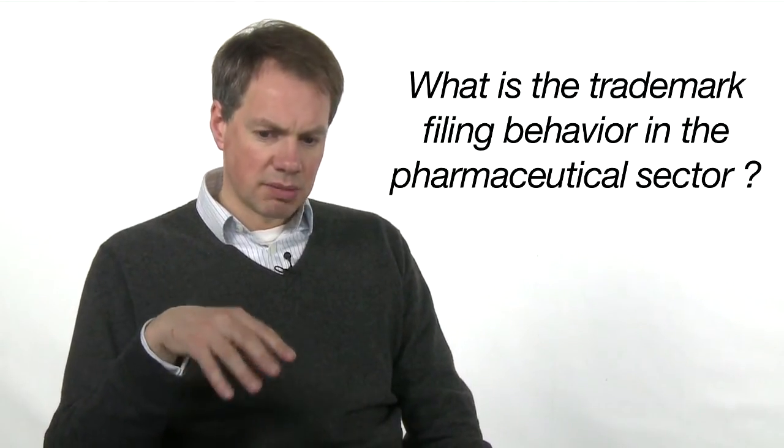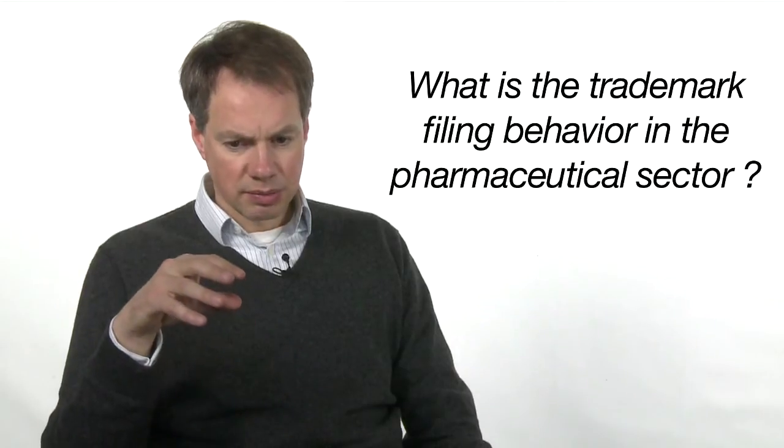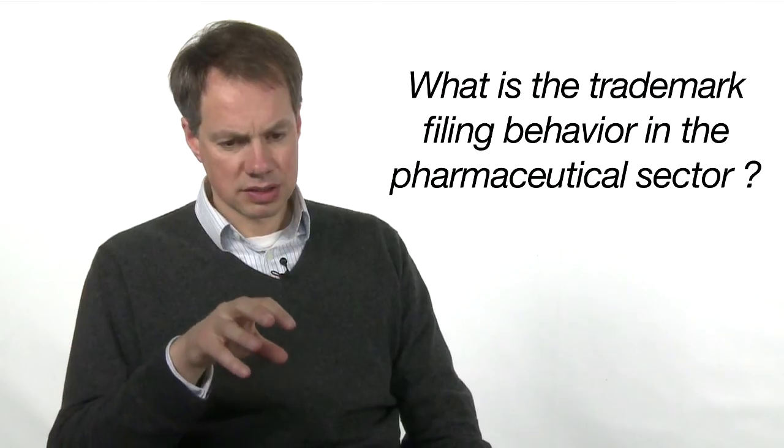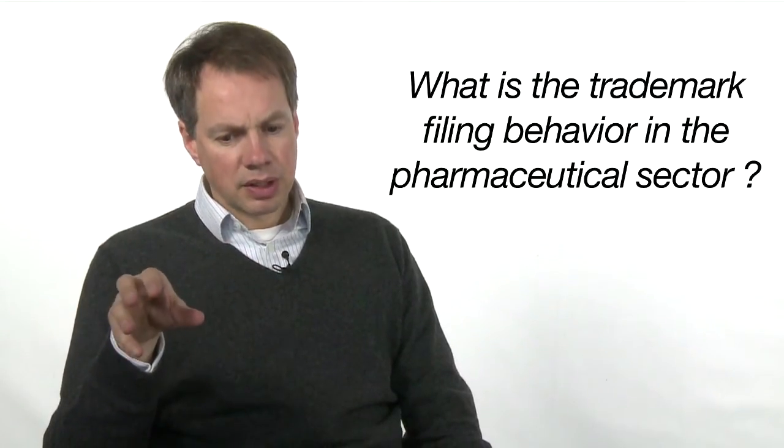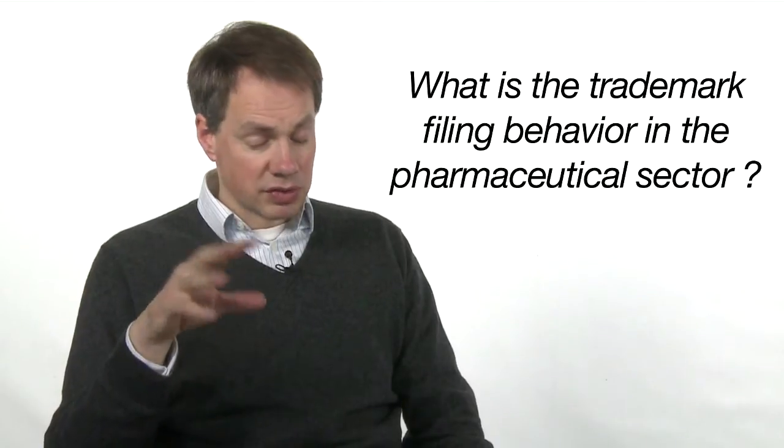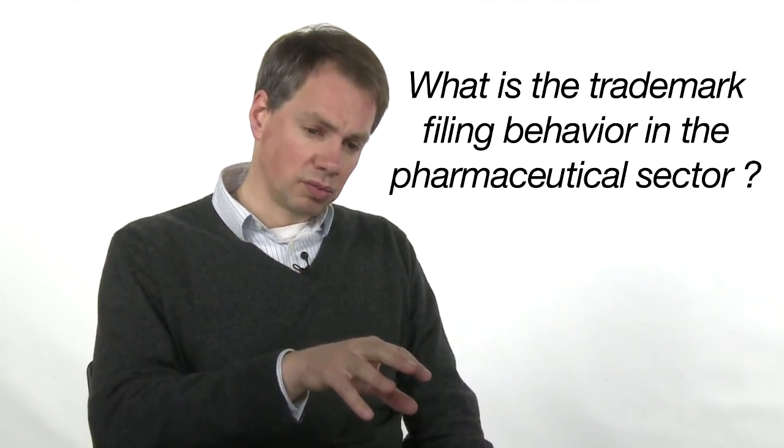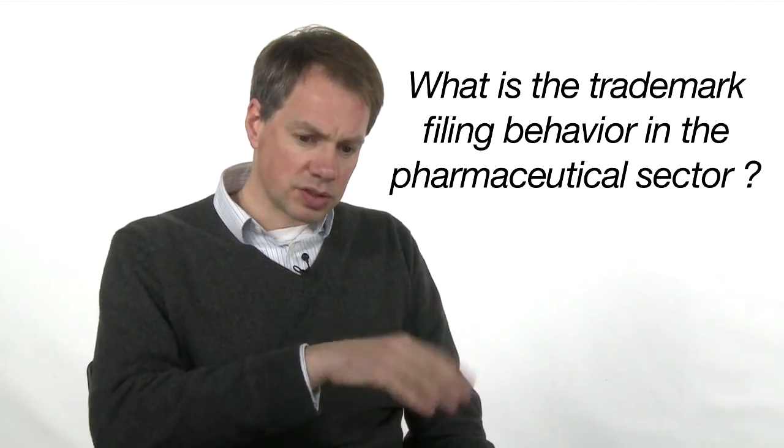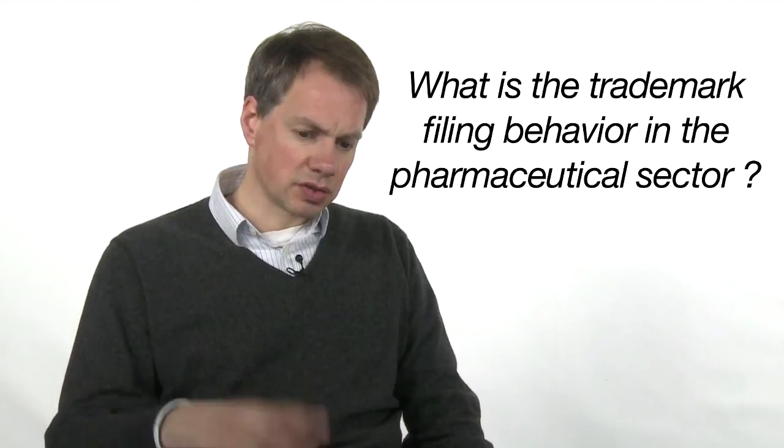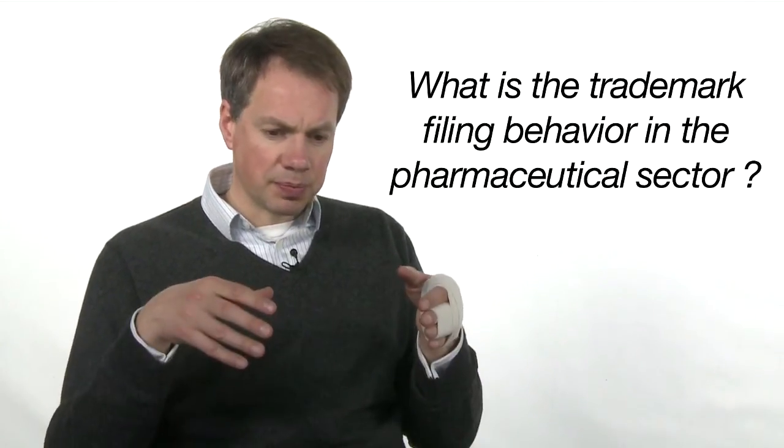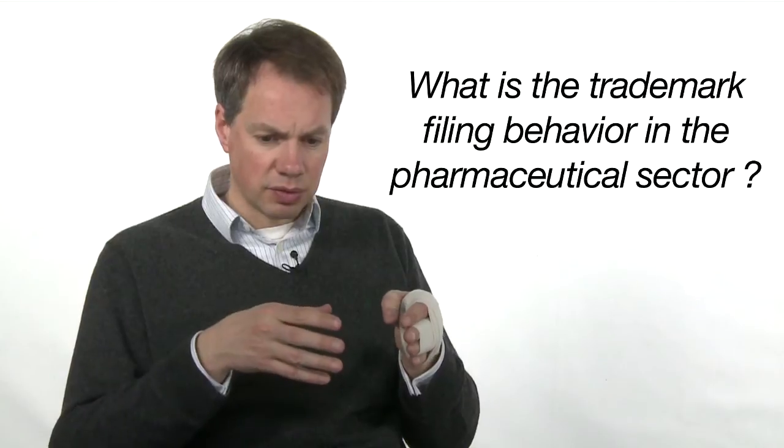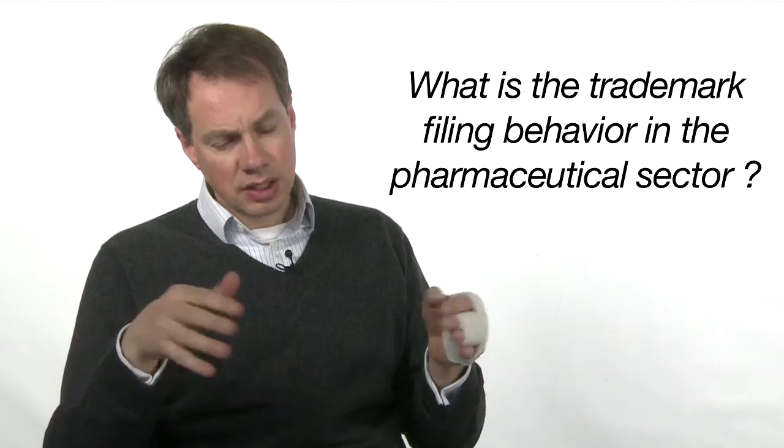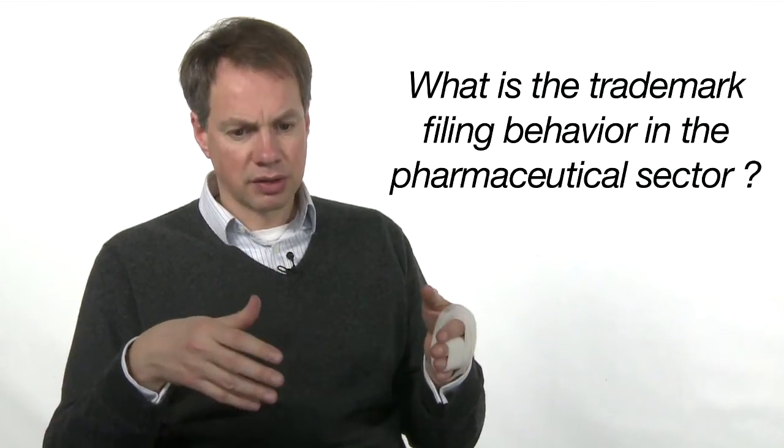They do this because they might be afraid that a regulator trying to make sure the medicine name doesn't confuse patients might be strict and say that a particular trademark is too similar to another trademark already in use. So the applicant will choose a whole set of names, say five or eight names, and register all of these in the trademark office.